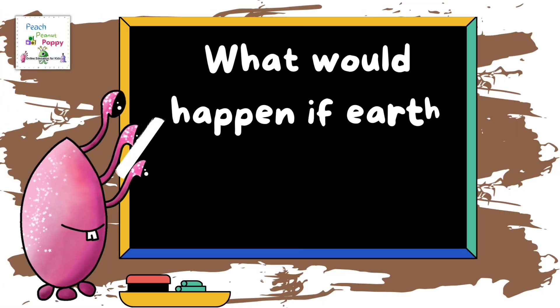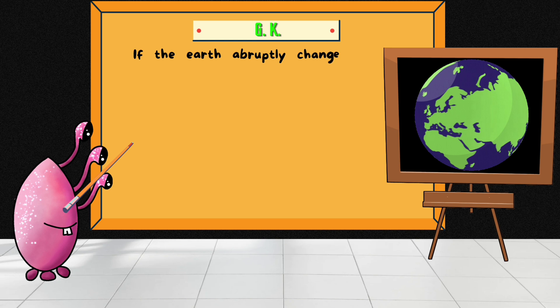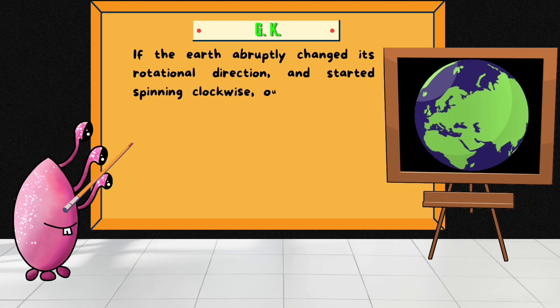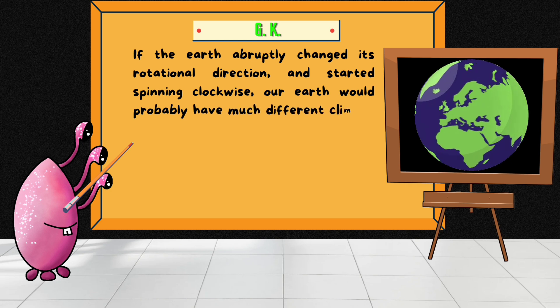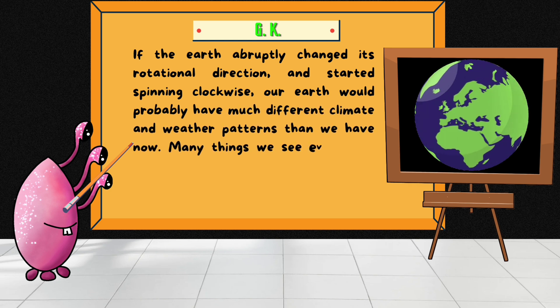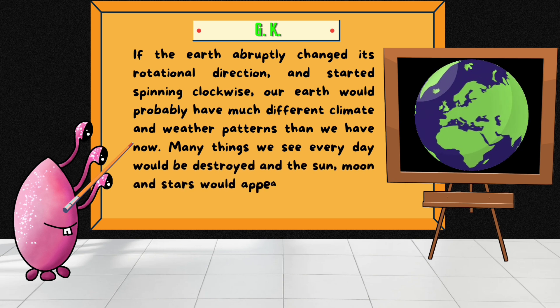What would happen if Earth started spinning clockwise? If the Earth abruptly changed its rotational direction and started spinning clockwise, our Earth would probably have much different climate and weather patterns than we have now. Many things we see every day would be destroyed and the Sun, Moon and stars will appear to rise in the West and set in the East.